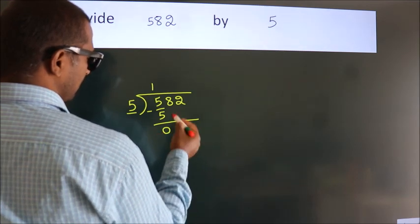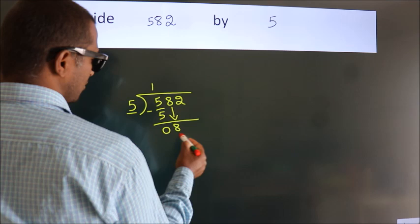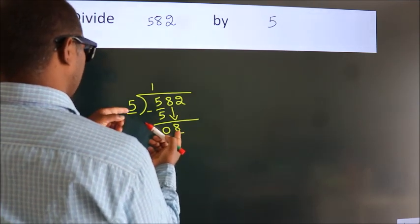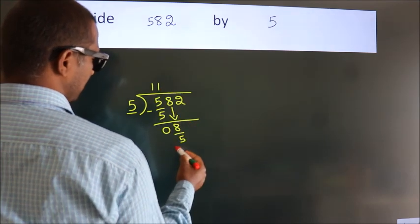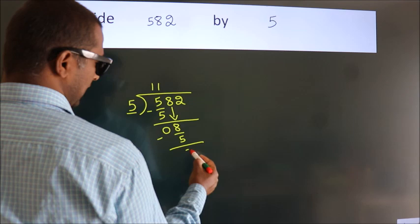After this, bring down the next number, so 8 down, so 8. A number close to 8 in the 5 table is 5 once, 5. Now we subtract, we get 3.